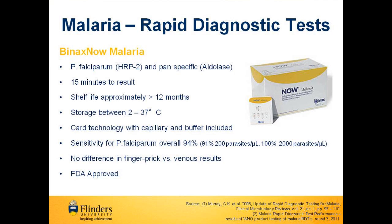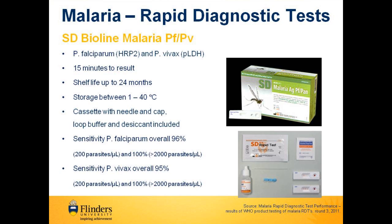The SD Bioline malaria RDT is a cassette technology that can differentiate between Plasmodium falciparum and Plasmodium vivax. It has a long shelf life of up to 24 months and a storage temperature of between 1 and 40 degrees Celsius. In Round 3 testing by the World Health Organisation, the SD Bioline kit sensitivity for both Plasmodium falciparum and Plasmodium vivax was 95% or greater for different parasite loads.